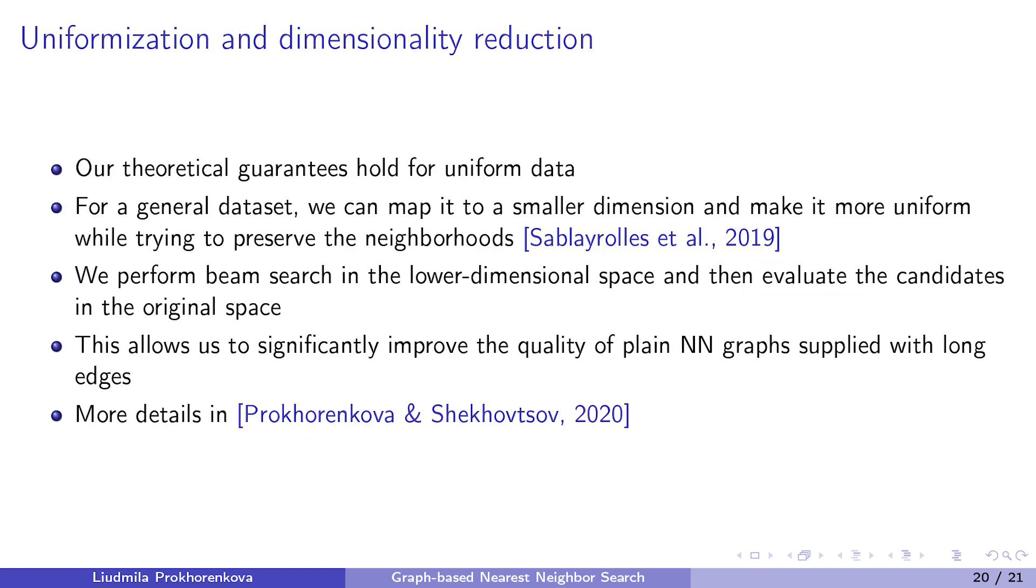Finally, let me discuss some practical insights that we've got based on the theoretical analysis. Recall that all theoretical guarantees hold only for the uniform distribution. We also know that the nearest neighbor search is easier for dense datasets. However, a general dataset can be mapped into a smaller dimensional one, and for this we can use the loss function that combines the triplet loss to preserve the local geometry with the entropy loss to enforce the uniformity. Then, for each query, we map it to the lower dimensional space, perform beam search there, and evaluate the best candidates in the original space. It turns out that this approach significantly improves the quality of plain nearest neighbor graphs supplied with long edges. In particular, the obtained method becomes competitive with HNSW, although we do not use graph diversification.